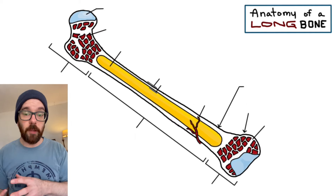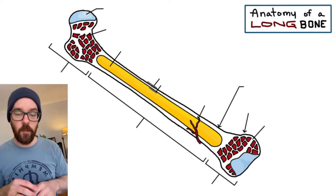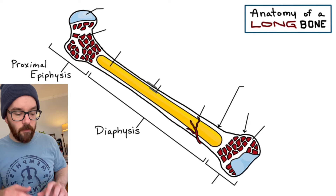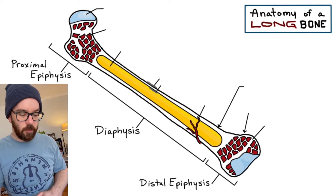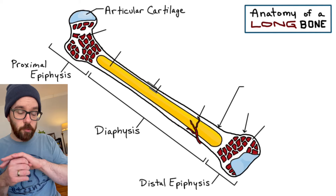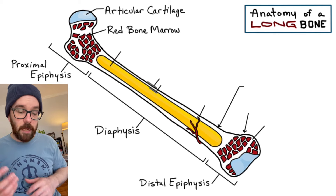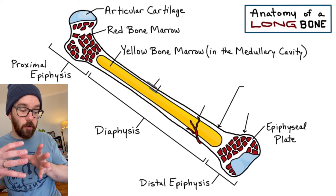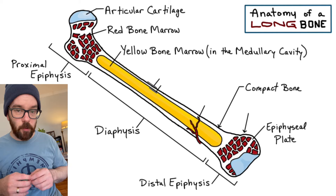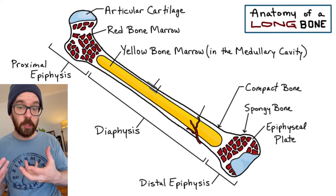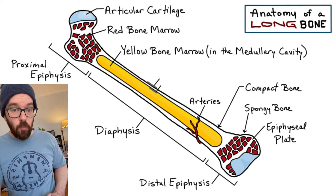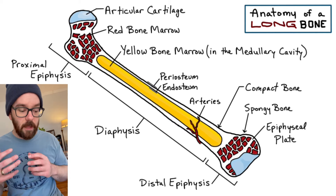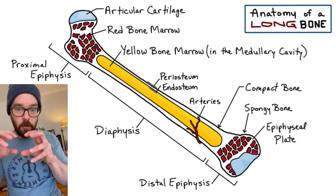Here's the diagram blank now — pause the video and see if you can identify all the parts of our long bone. Here we have the diaphysis, or shaft of the bone. The proximal epiphysis and the distal epiphysis. Articular cartilage, which lowers friction in our joints. Red bone marrow to make blood cells. Yellow bone marrow for fat storage. Epiphyseal plates where bone grows longer. Compact bone, which gives strength. Spongy bone, which makes bone light and houses red bone marrow. Arteries to transport nutrients and blood cells. And the periosteum and endosteum so bones can grow thicker and stronger.